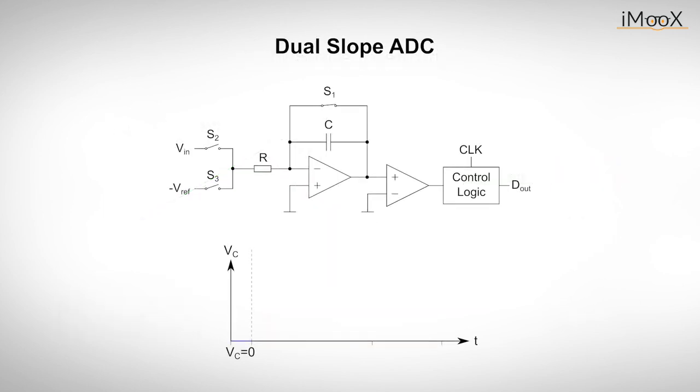Let's look at this simplified schematic of a dual slope converter. The procedure consists of three steps. At the beginning, the switch S1 is closed and the integration capacitor is discharged. In the next phase, S1 opens and S2 is closed. The capacitor C is charged with a fixed number N of clock pulses of duration T.